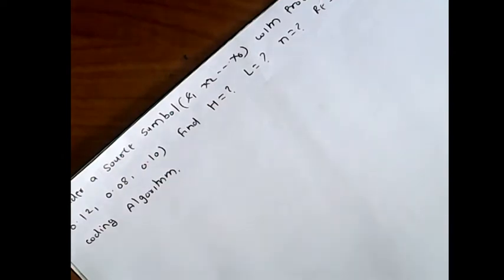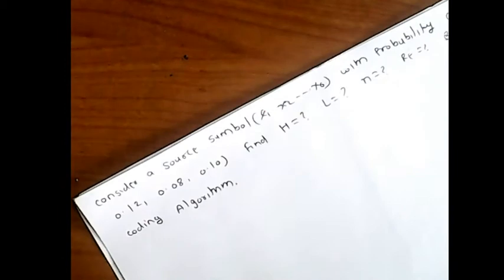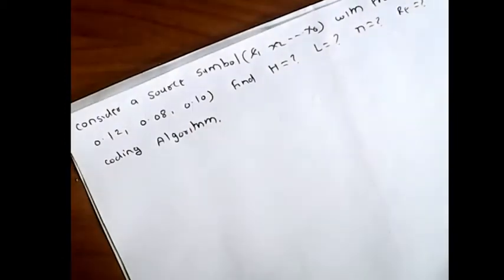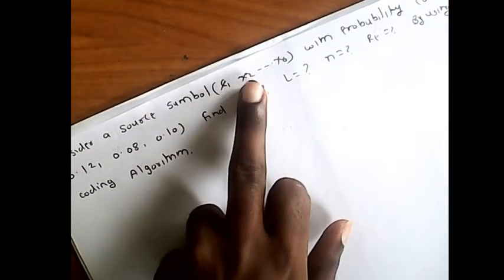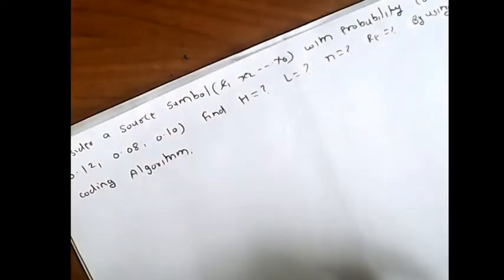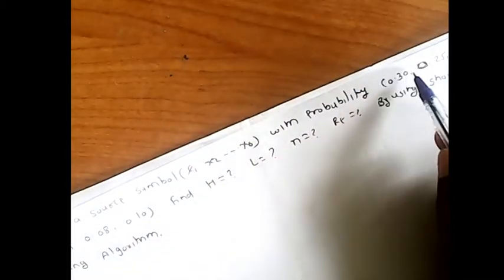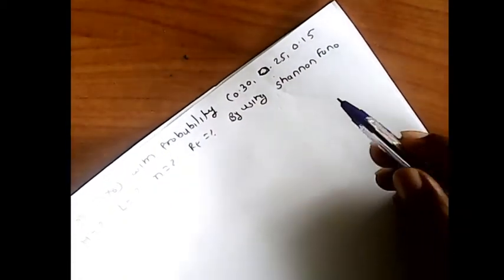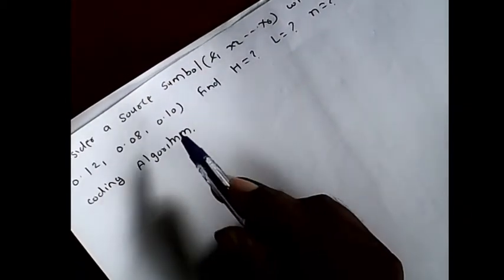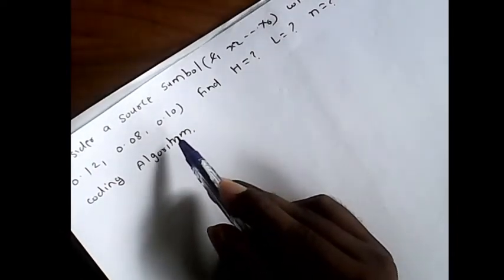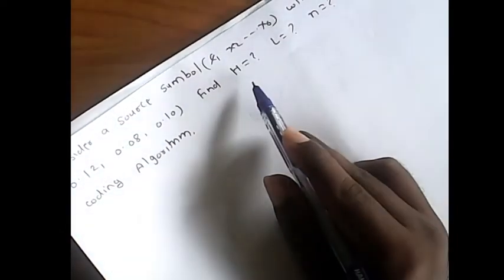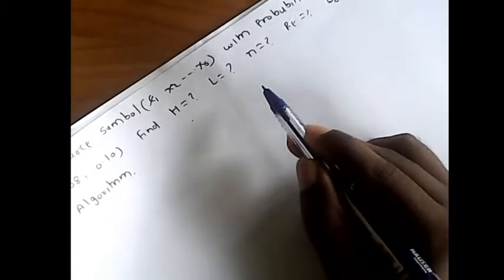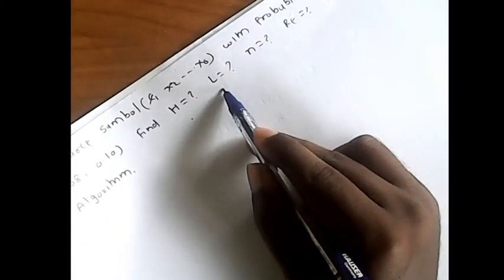We will start the next example based on the Shannon-Fano coding algorithm. Consider a source with symbols x1, x2 up to x6, with corresponding probabilities 0.20, 0.25, 0.15, 0.12, 0.08, and 0.10. We need to find the average information (entropy), average code word length, coding efficiency, and redundancy using the Shannon-Fano coding algorithm.